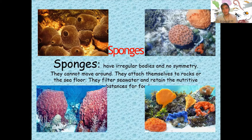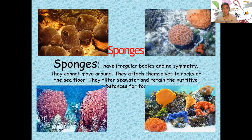Sponges have irregular bodies with no symmetry. They cannot move around; they attach themselves to rocks or the sea floor. Using this attachment, they filter sea water so that they can retain the nutritive substances used as their food.